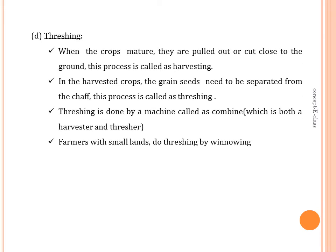The fourth question was threshing. When crops mature they are pulled out or cut close to the ground — this process is called harvesting. In the harvested crops, grain seeds need to be separated from the chaff, and that process is called threshing. Threshing is done by a machine called a combine, which is both a harvester and a thresher.